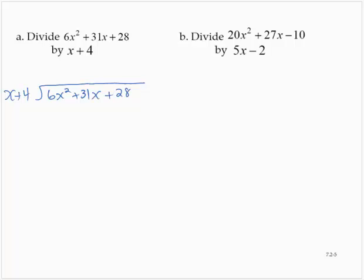The first thing that we do is we focus only on the lead term in the divisor. So let's focus on the x. What's 6x squared divided by x? 6x squared divided by x is 6x. Now when we multiply back, we multiply back through the entire divisor, which gives us 6x squared and plus 24x.